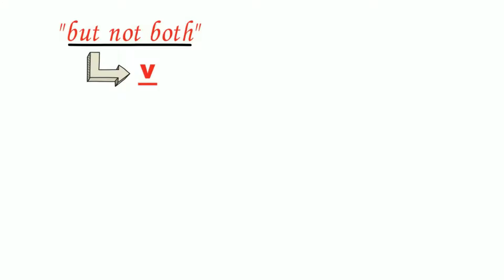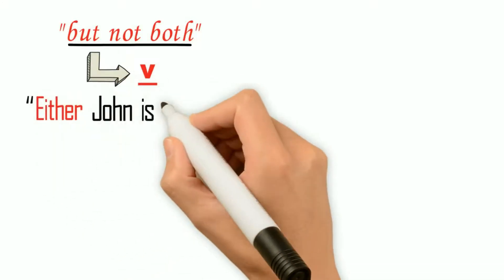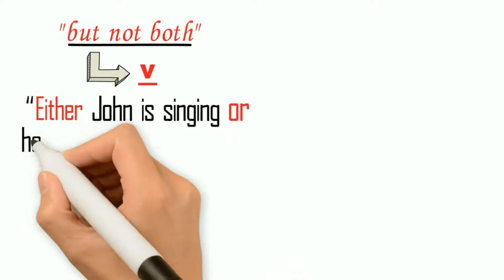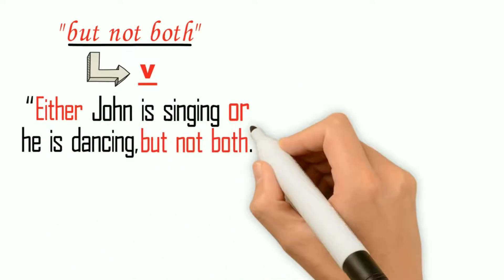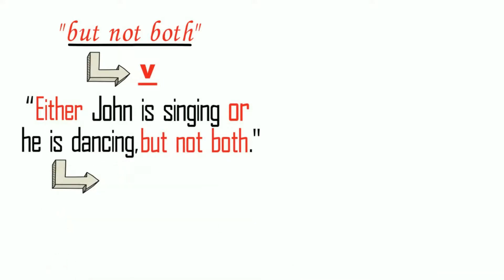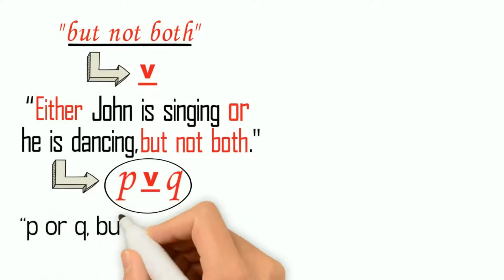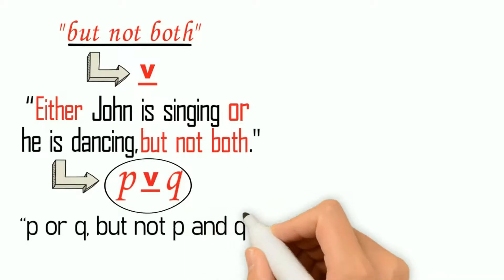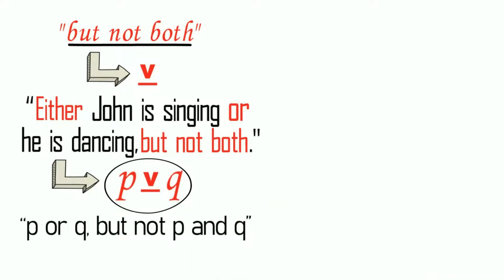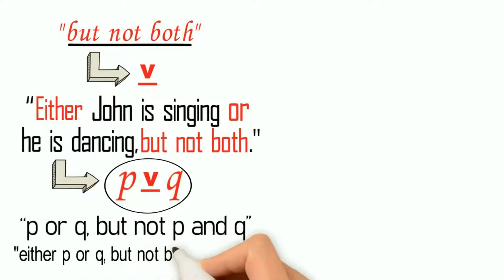However, logicians use a more simplified symbol for the phrase 'but not both' — they use the underlined wedge to symbolize 'but not both.' Thus the exclusive disjunction 'either John is singing or he is dancing but not both' is symbolized with the underlined wedge, and this symbol is read as 'P or Q,' or 'P or Q but not P and Q,' or 'either P or Q but not both P and Q.'